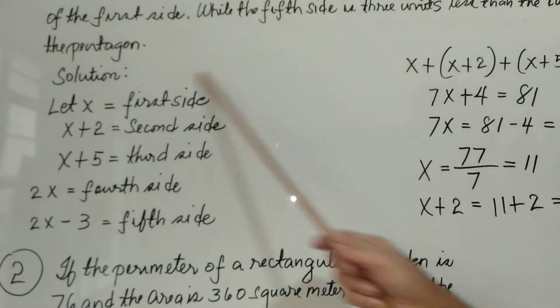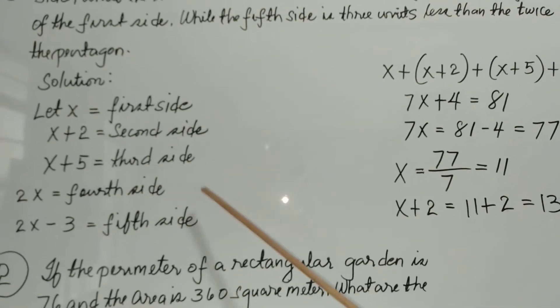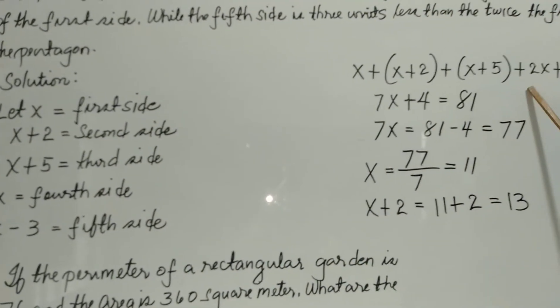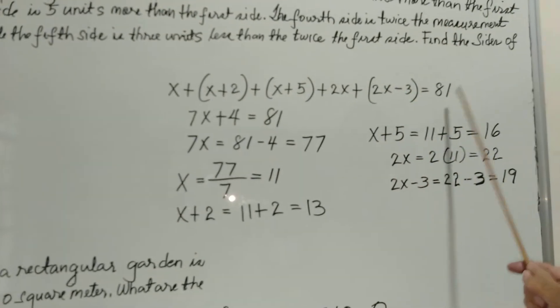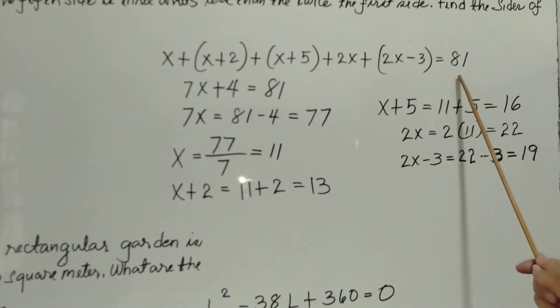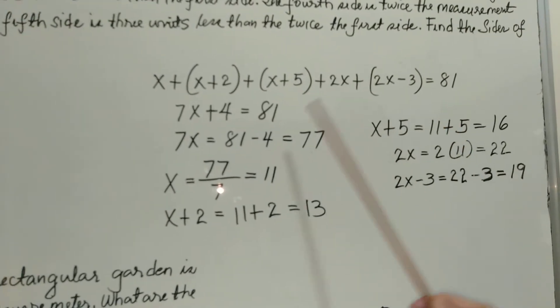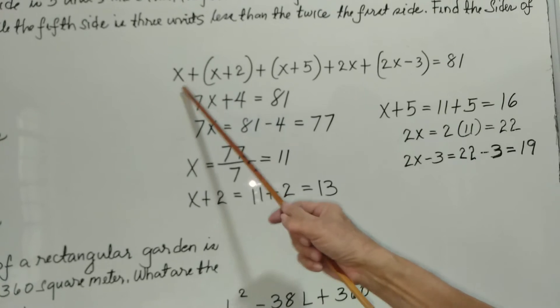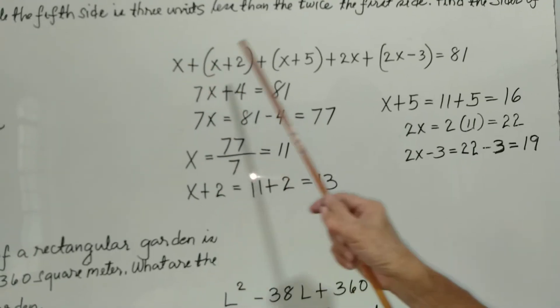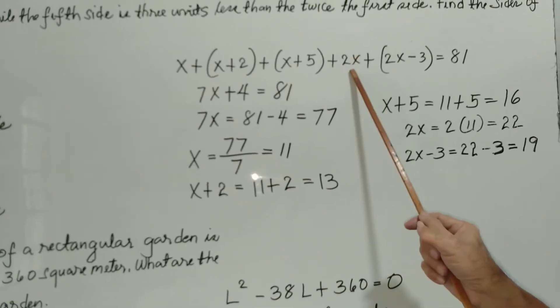We just add these polynomials here, and the sum is 81. We add all the x's: 1, 2, 3, 5, 7. So 7x.